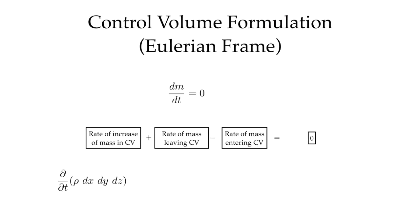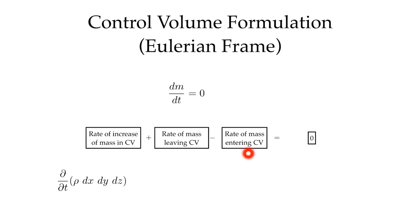Now let's look at our equation again. When we're looking at a fixed mass system, it was dm/dt equal to zero. We've expressed this in words for our control volume formulation: the rate of increase of mass in the control volume plus the rate of mass leaving minus the rate of mass entering the control volume is equal to zero.